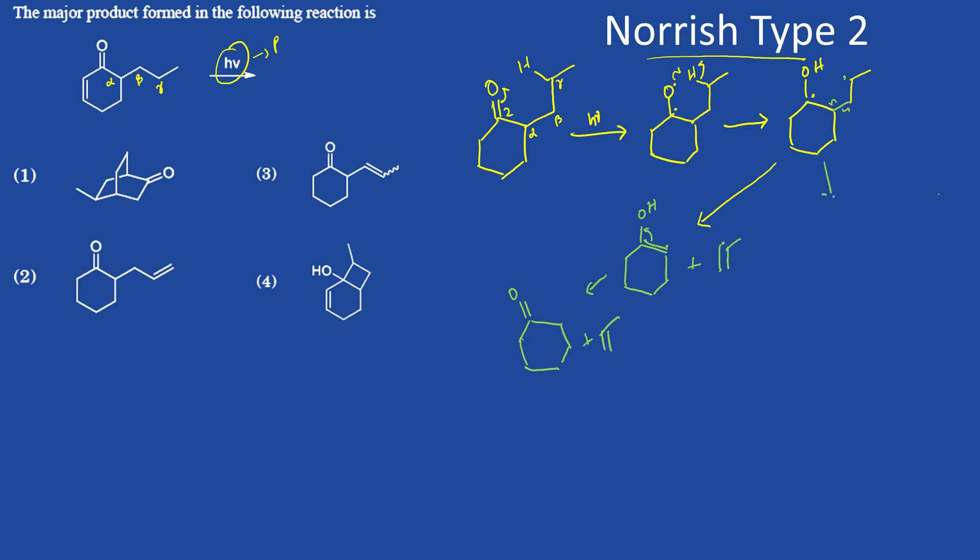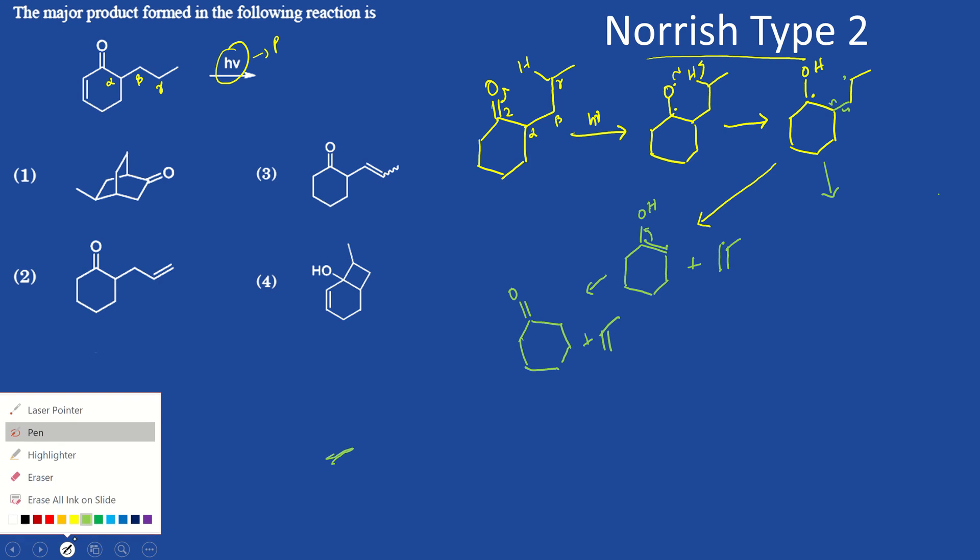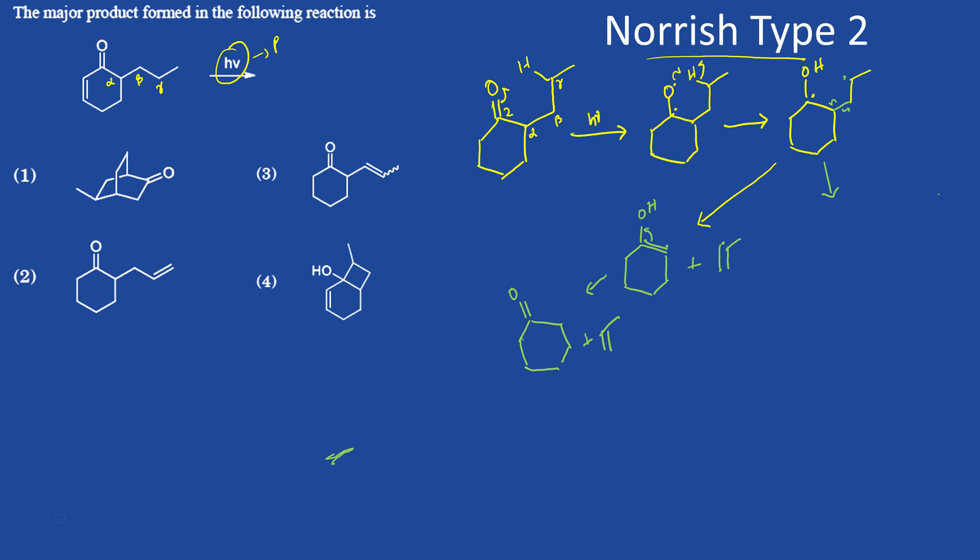Another possibility is, I will change the color. As you can see, another possibility is both of them can form a ring formation like this, leading to - it will form here is a radical, here is a radical, so it will form a ring formation like this. So when we look at the options we can see...